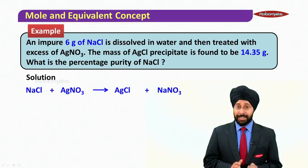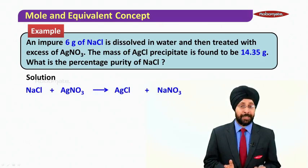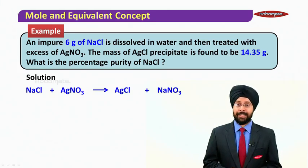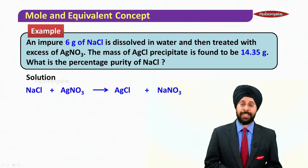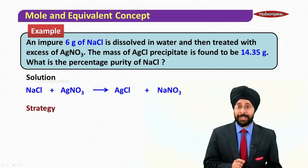Now in this case, first we will write the reaction. It is a double displacement reaction. NaCl plus AgNO3 gives you AgCl plus NaNO3. And now we will first develop the strategy here.